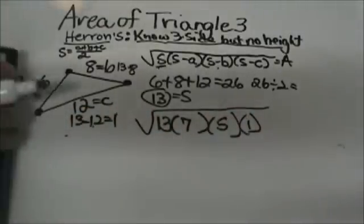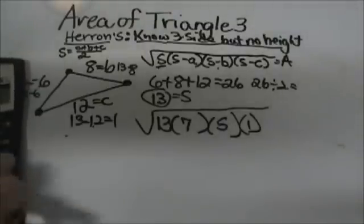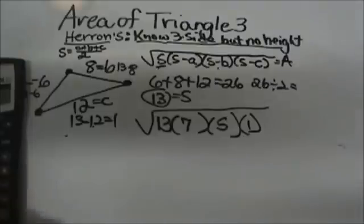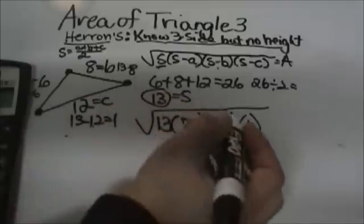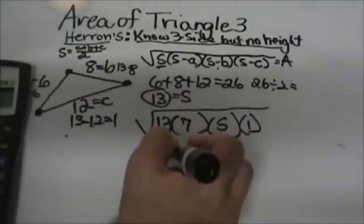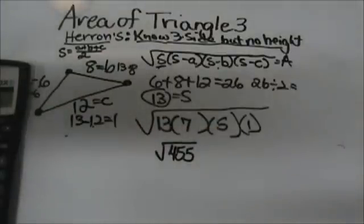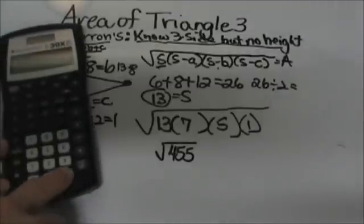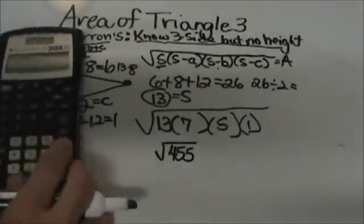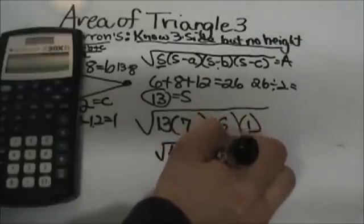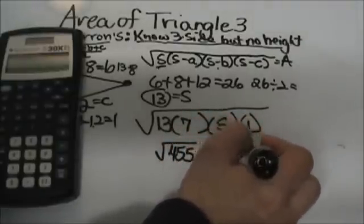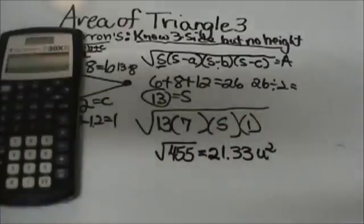So now let's take the product. I am going to grab my calculator and take the product of 13 times 7 times 5 times 1. Of course we do not really need to multiply by 1 because 1 times anything is itself. So that is 455 and I am going to take the square root of that product. So now in my calculator I hit my second function button my x squared and second function in the little negative sign and that brings up my last answer. So I get 21.33 and that would be units squared because it is area.